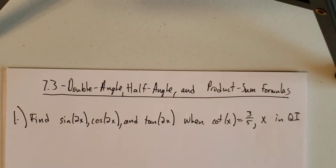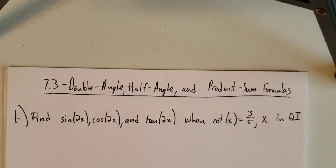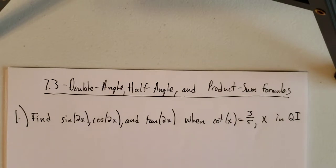In this video, we're going to cover section 7.3 titled Double Angle, Half Angle, and Product Sum Formulas. We're actually just going to go over two examples, so I'll have a double angle formula and a half angle formula example.